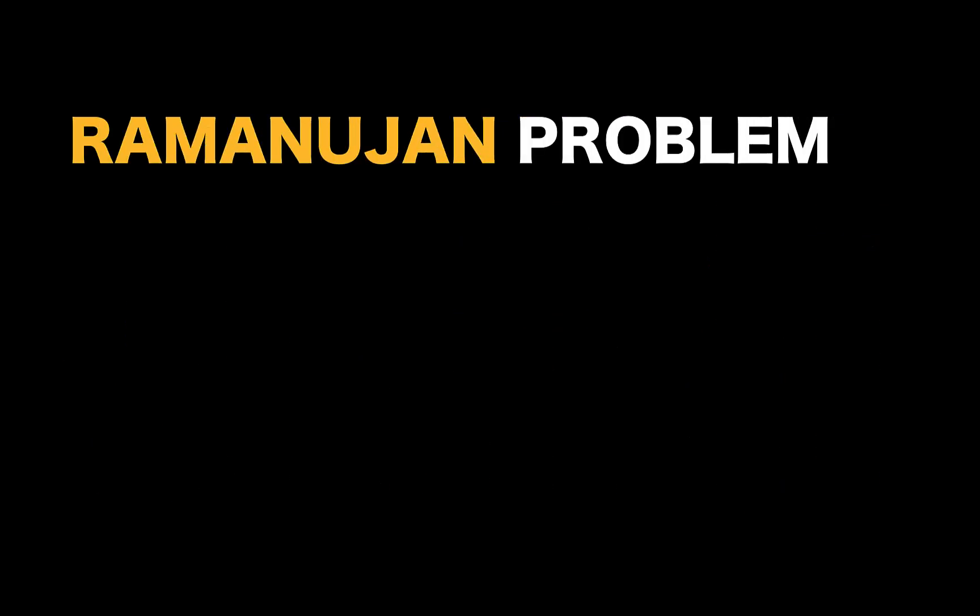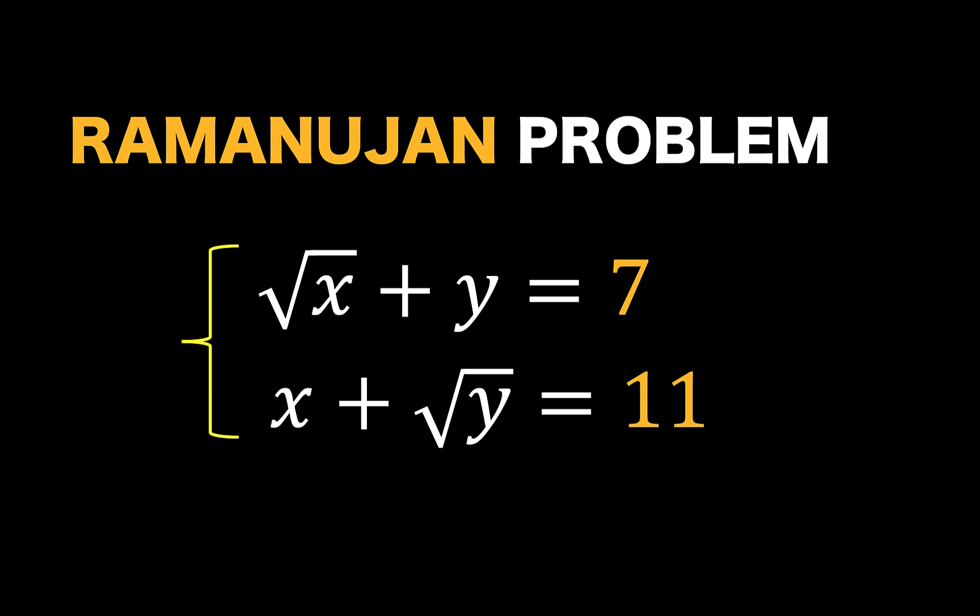Here's our problem for today. Let's say we are given this system of equations. The square root of x plus y equals 7, and x plus square root of y equals 11. Find the values of x and y.